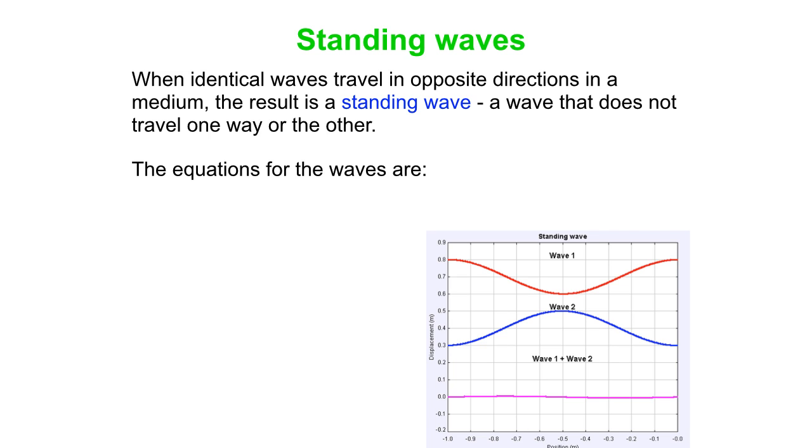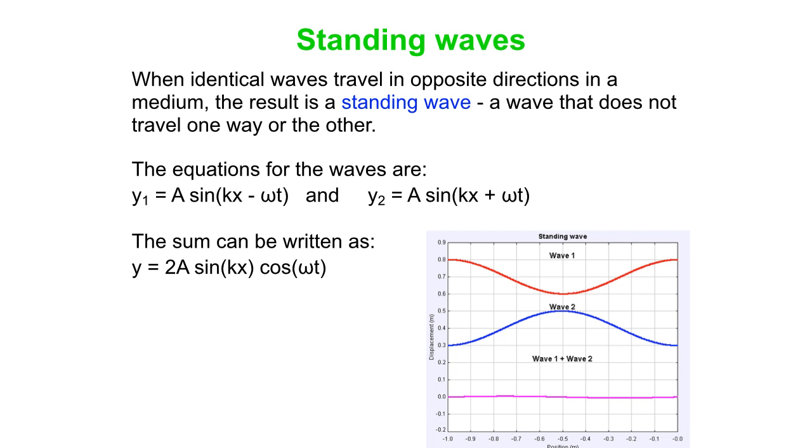The equations for the individual waves are y1 = A sin(kx - ωt) and y2 = A sin(kx + ωt). The only difference is that sign, which means the only difference is which way the waves travel. It turns out that the sum can be written like so: y = 2A sin(kx) cos(ωt). You get double the amplitude, sine kx, totally separate from cosine omega t. The spatial part is now separated from the time part.